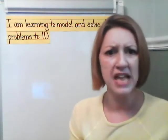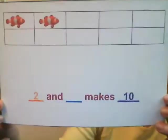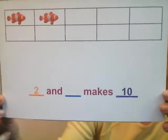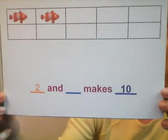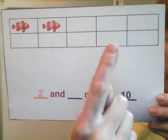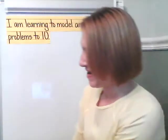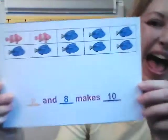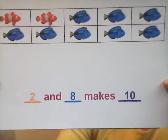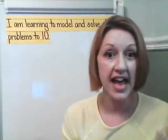Are there any other combinations that make 10? What if we had two orange fish? How many blue fish would we need to make 10? Look at our ten-frame — I see two orange fish. How many spaces are left over? 1, 2, 3, 4, 5, 6, 7, 8. Did you say two and eight? I think you're right. Two and eight makes 10. So we have two different combinations: one and nine, and two and eight.